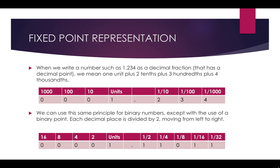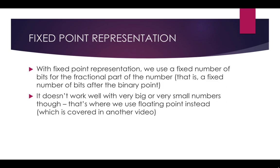In this example we just have five numbers on each side of the binary point. With this binary number, it is written as one unit plus 1 over 2 (half) plus a quarter plus 1 over 16 plus 1 over 32.